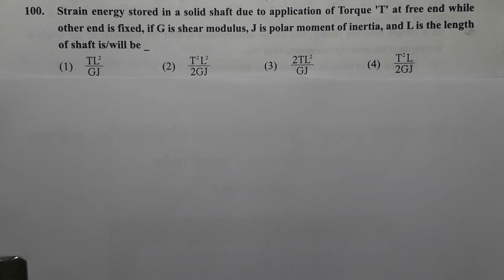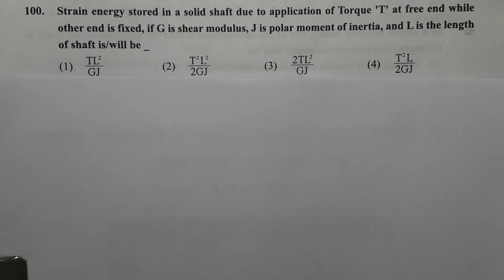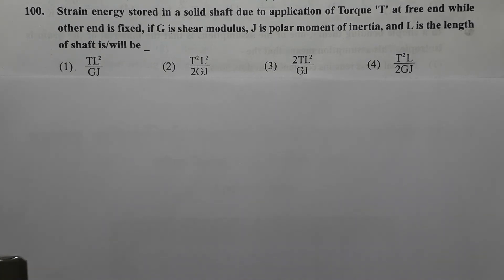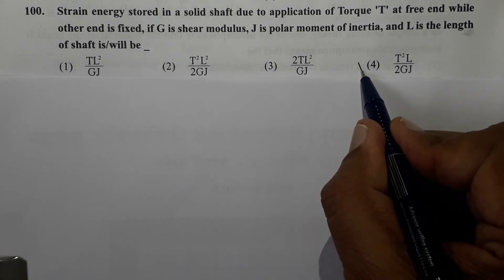Next question: Strain energy stored in a solid shaft due to application of torque T at the free end while the other end is fixed — if G is shear modulus, J is polar moment of inertia, and L is the length of the shaft — will be? The standard formula for strain energy stored in a solid shaft due to torque is T²L / (2GJ). The correct option is option 4.